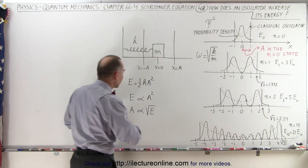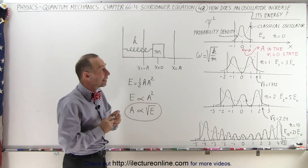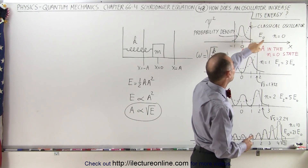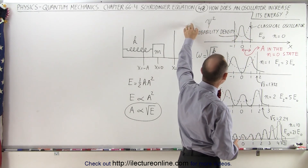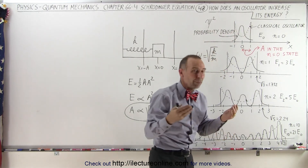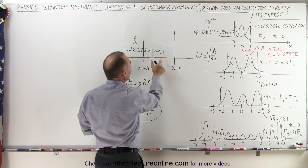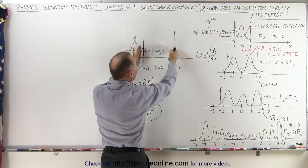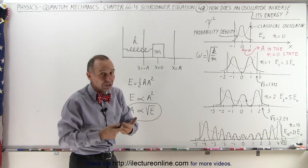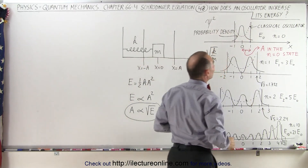The amplitude is proportional to the square root of the energy. Looking at the energy of the basic state — the n equals zero state at the lowest energy level — this is what the probability density function looks like. The dashed line represents the classical oscillator. For a classical oscillator, it is more likely to find the object at the edges because that's where the speed is slower, and less likely to find it in the middle because the speed is faster. But with the probability density function, you can expect to find it much more likely in the middle and much less likely towards the edges of the oscillation.